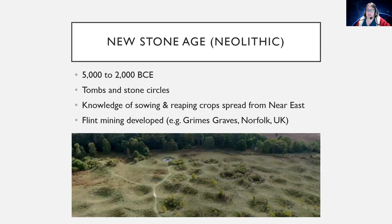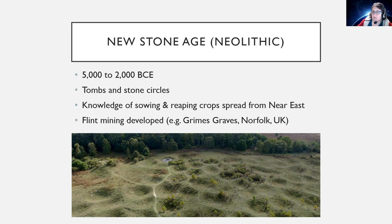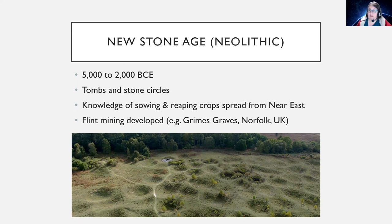If you've ever visited Grimes Graves, it's absolutely incredible. The little depressions you can see in the photograph are the remains of bell pits, where people dug down into the earth on ladders and mined out galleries on either side of the bottom of the pit to reach the really good flint underground. You can actually go into one of the excavated bell pits and see the tunnels — made with bone and antler picks. Mind-blowing. Check it out if you're ever in the area.